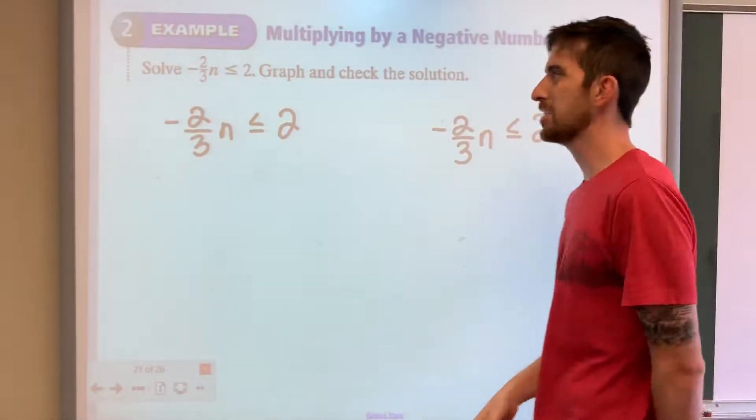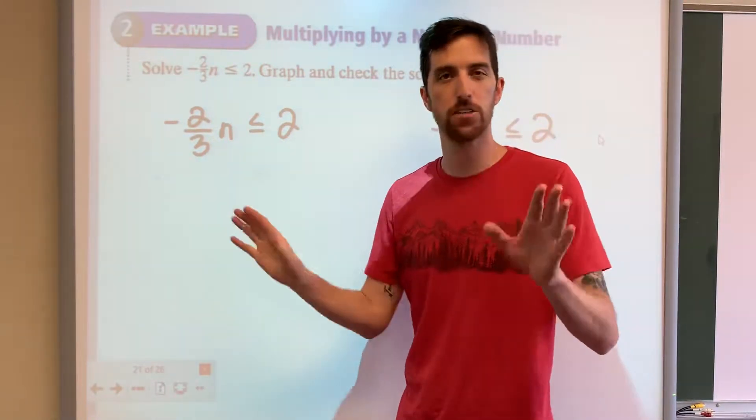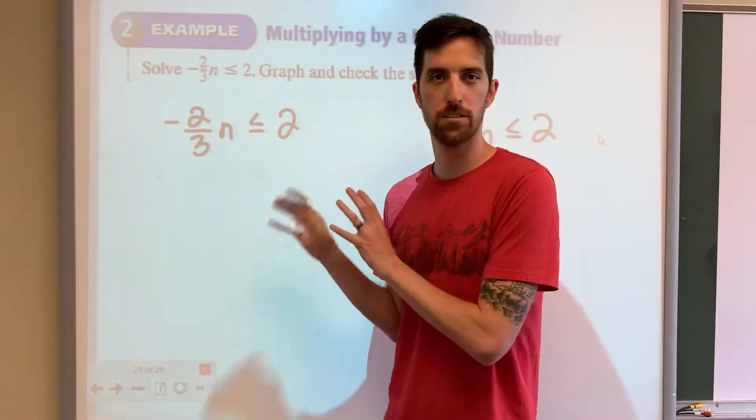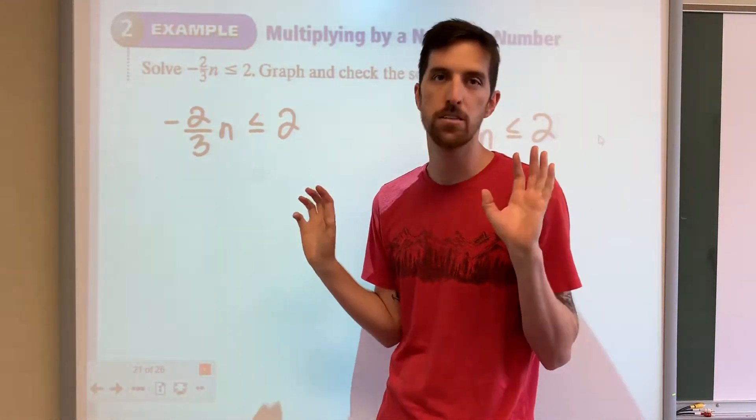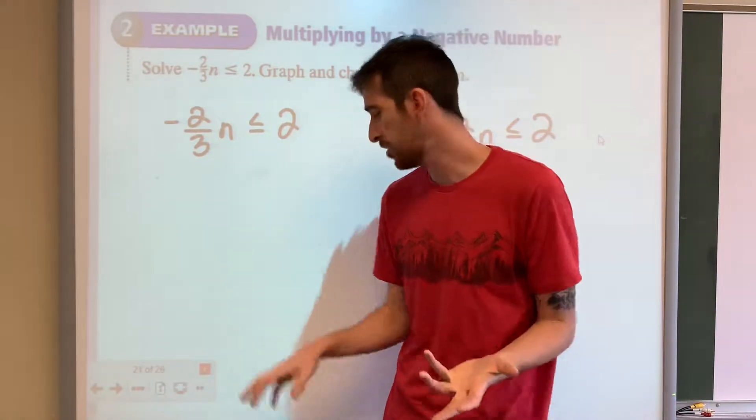All right, we got negative 2 thirds n is less than or equal to 2. I'm going to show you guys two different ways that you can solve this. There's probably a million other ways, but choose which way you like and then stick with it.